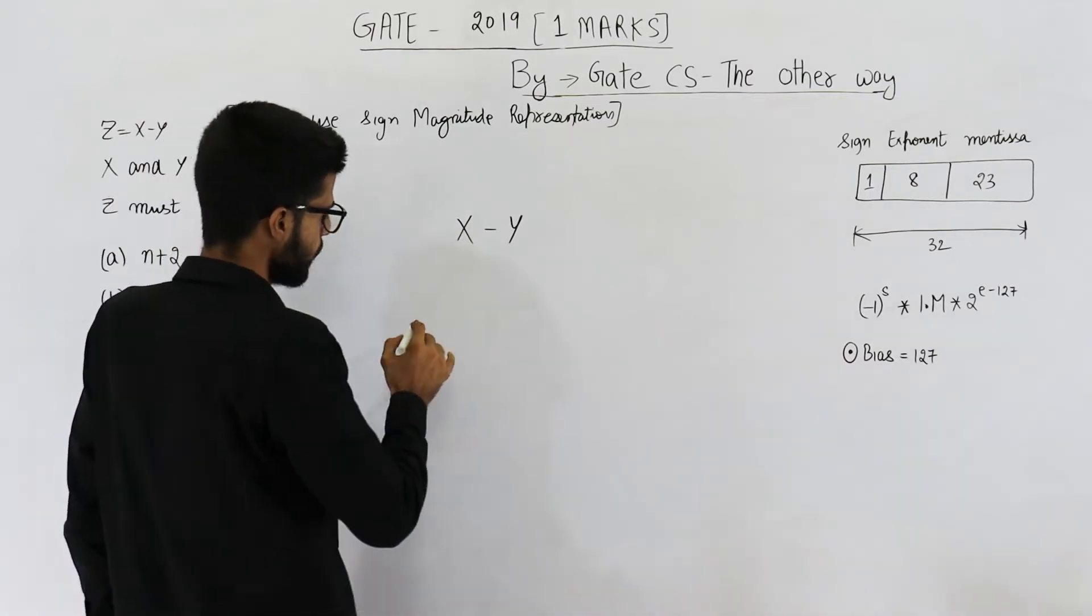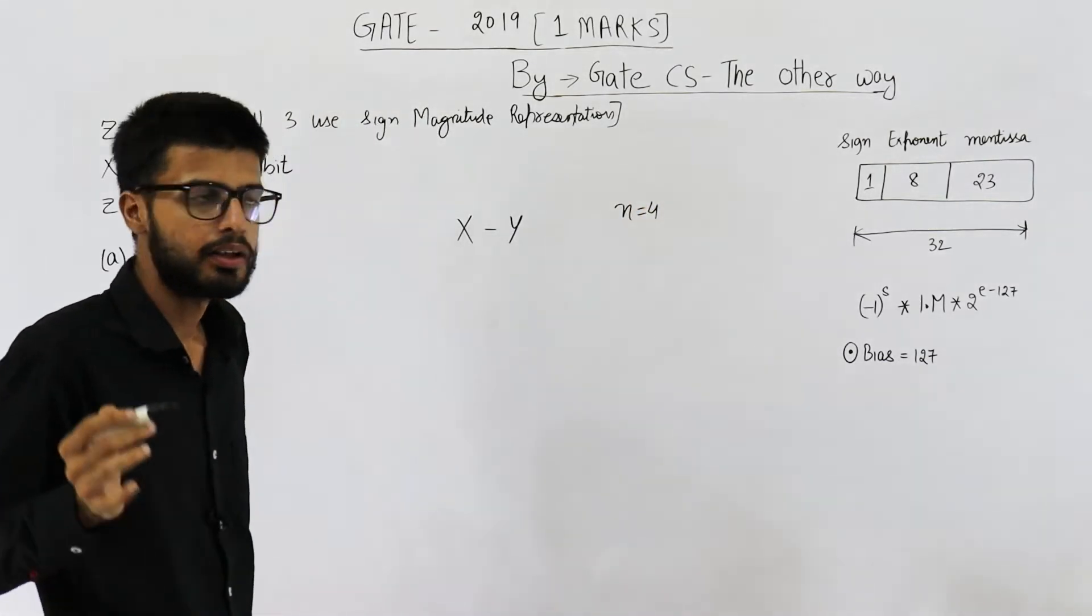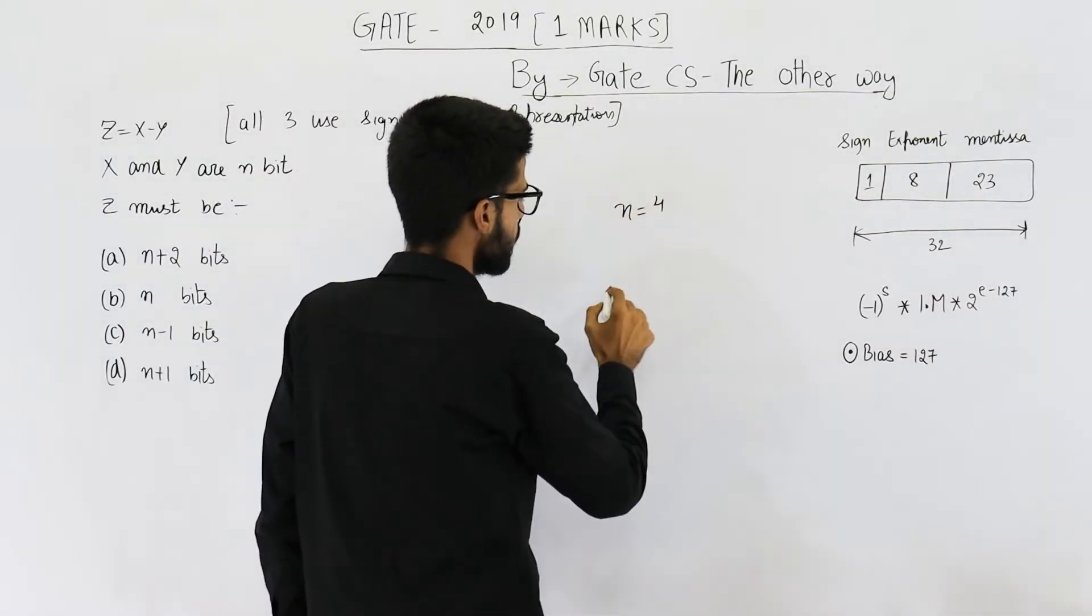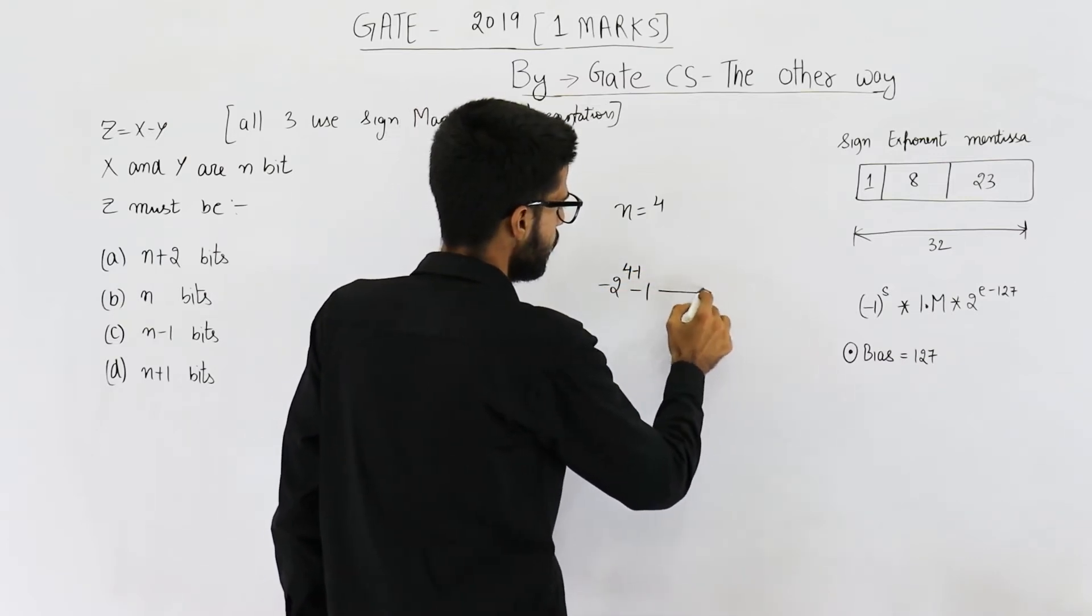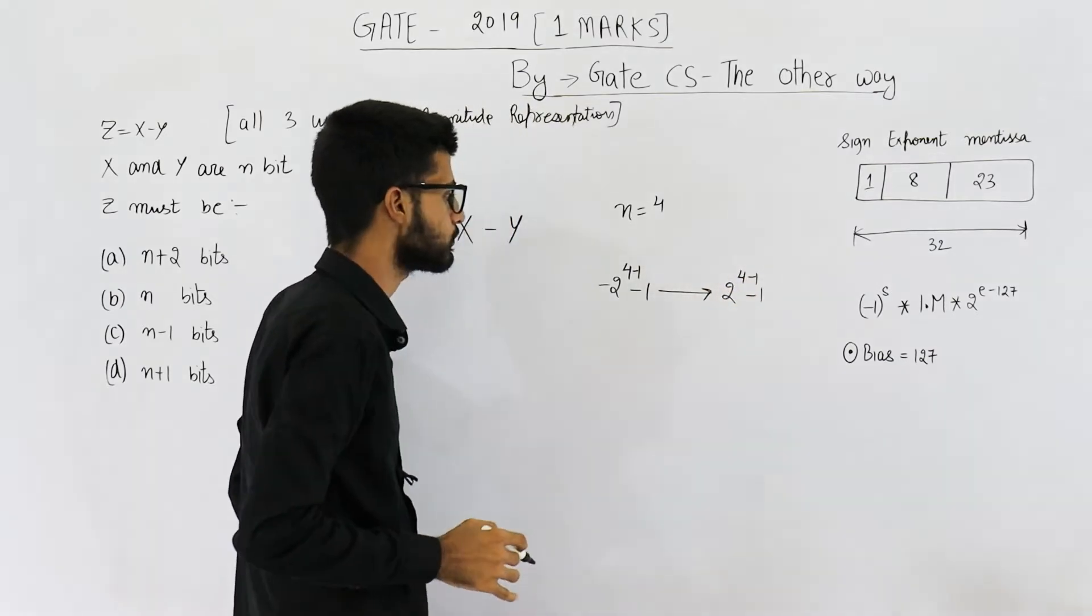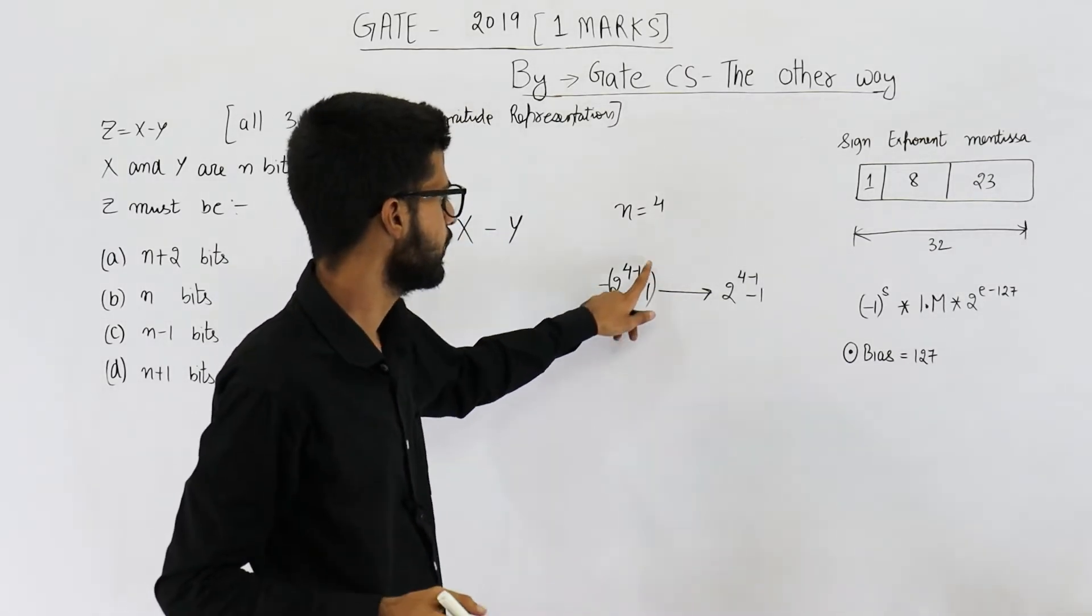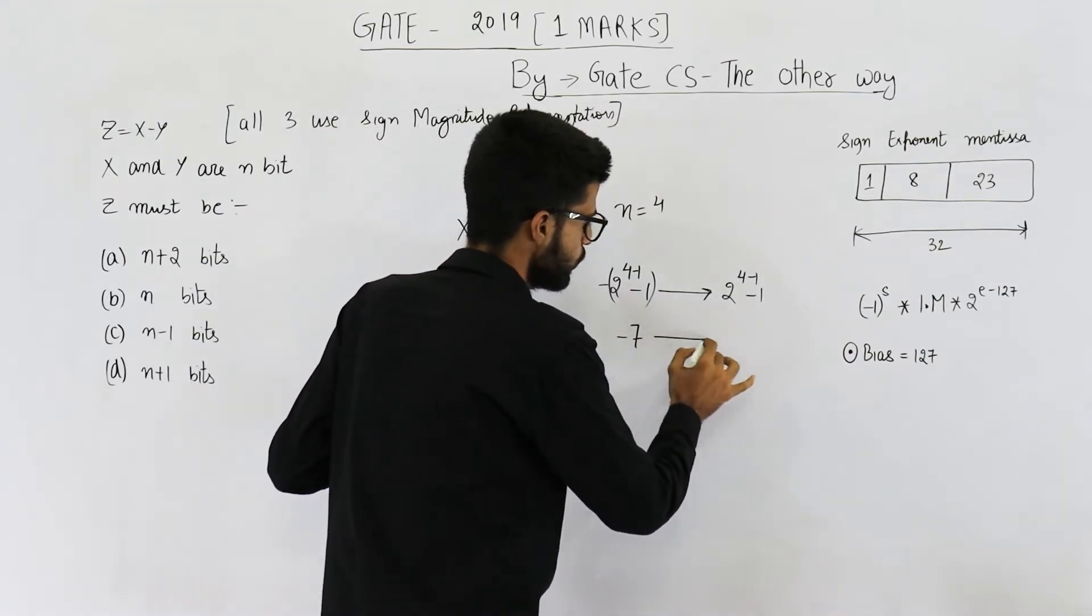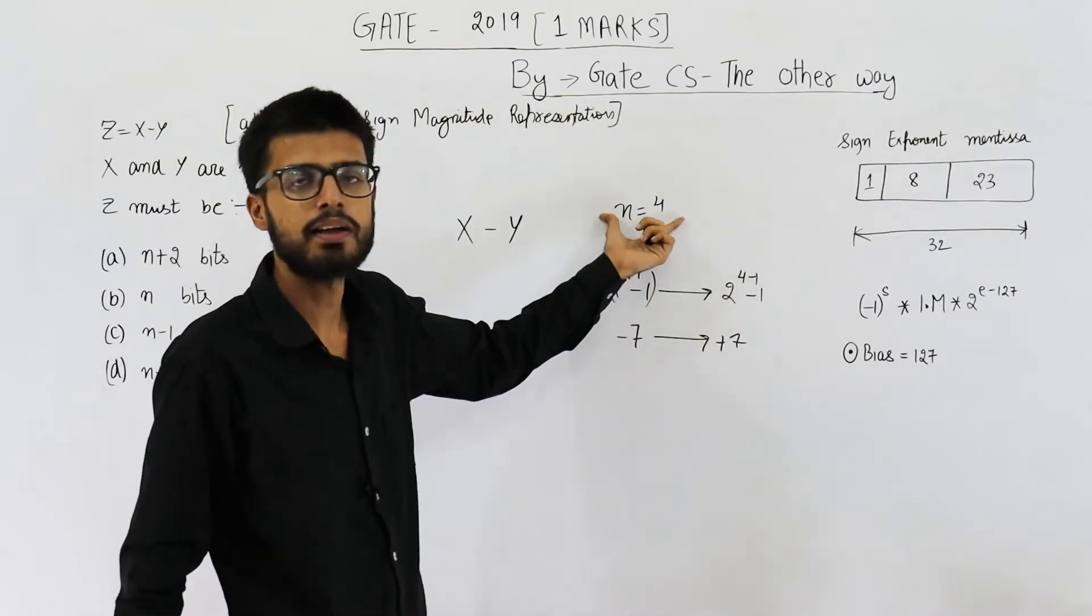Let us suppose n is equal to 4. In 4 bits, using sign magnitude representation, the range will be minus 2 power 4 minus 1 minus 1 to plus 2 power 4 minus 1 minus 1. So this will be 2 power 3 which is 8, 8 minus 1 is 7. So this is minus 7 to plus 7. This is the range that you can get with 4 bits.